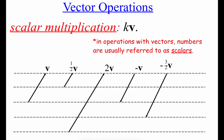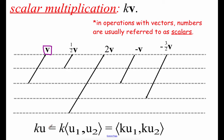Now we'll look at operations with vectors. The first is scalar multiplication — a plain number in this context is called a scalar. Taking a scalar k times a vector affects it as follows: half of v makes the vector half as long; 2 times v makes it twice as long; negative 1 times v gives a vector of the same length but pointing in the opposite direction; and negative three-halves times v makes it longer and pointing in the opposite direction. In component form, k times a vector just means multiplying k by each component: k times the x and k times the y.